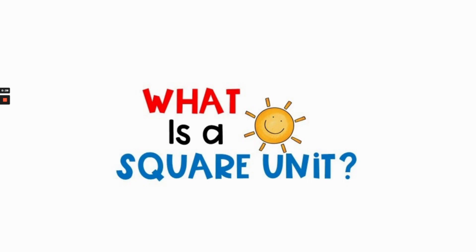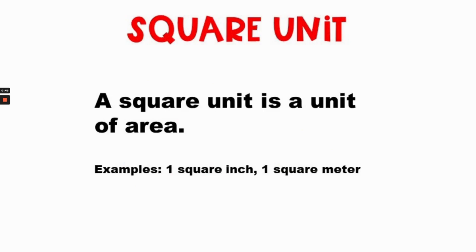Do you remember what a square unit is? A square unit is a unit of area. Examples would be one square inch, one square meter, one square mile, one square centimeter, and so on. Also remember that the squares cannot have gaps or overlaps.